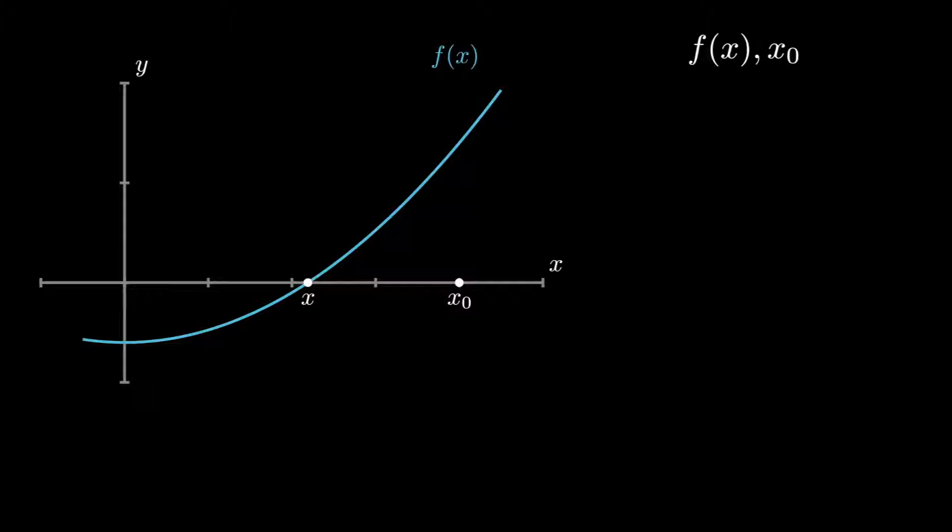Let's see what else we can calculate from f(x) and x_0. We can find the function value at x_0, that is f(x_0). How can we do this? By substituting x_0 in place of x in f(x). What else can we do?